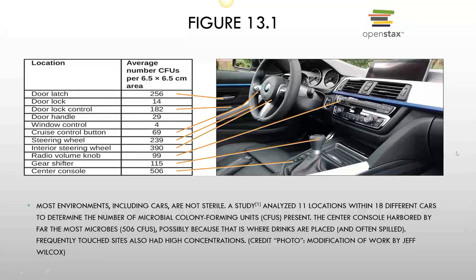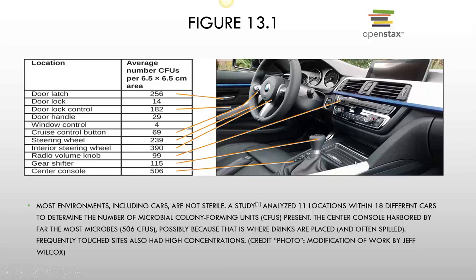This is a picture of a vehicle showing the most contaminated parts. The highest number is the center console, where a lot of things can get trapped. If you have children in your vehicle, you know you could probably lose an entire bag of chips inside your car, and that can be growing all sorts of stuff.